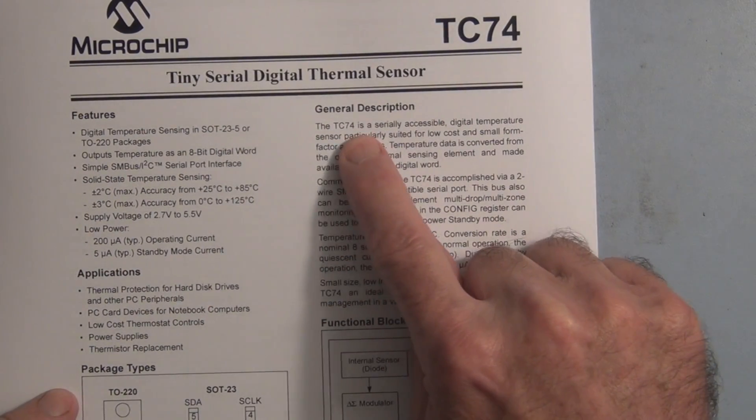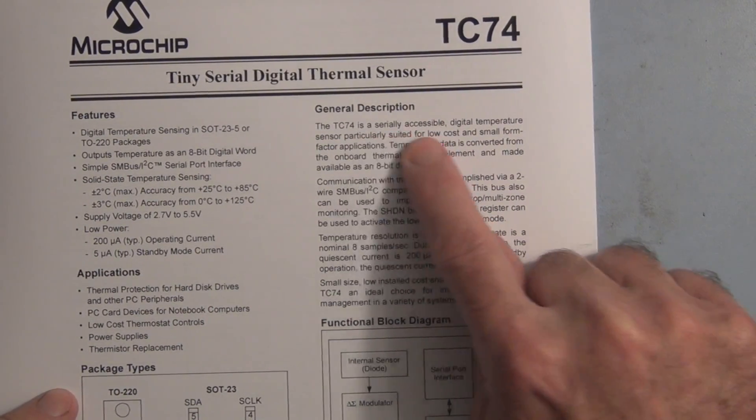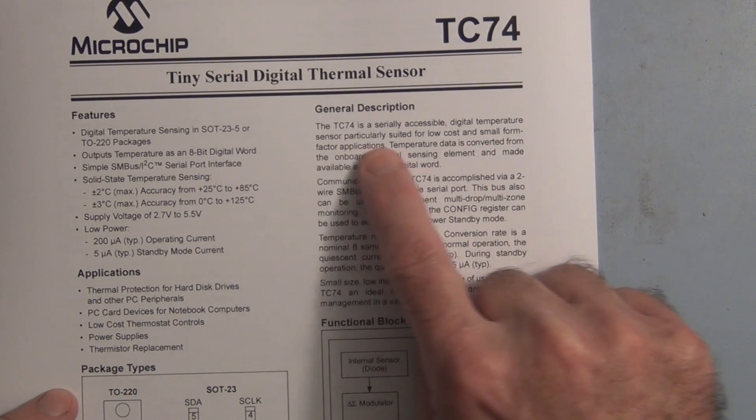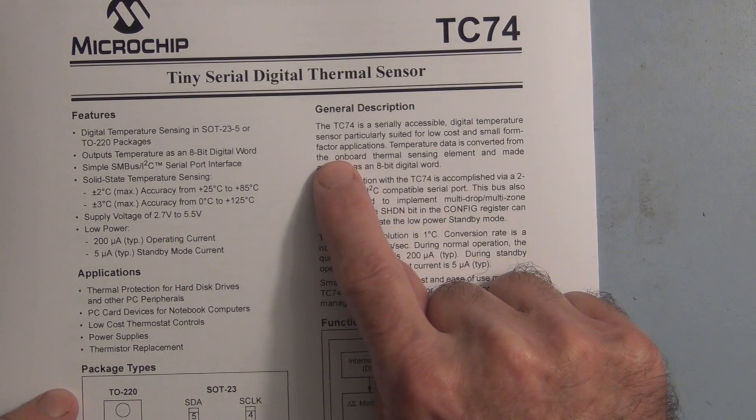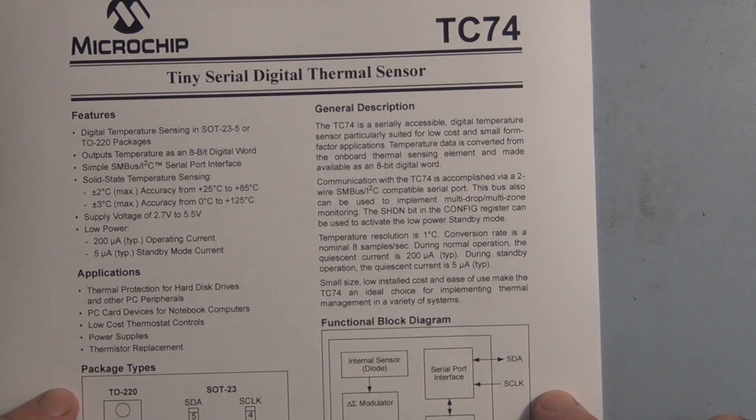The TC74 is a serially accessible digital temperature sensor particularly suited for low cost and small form factor applications.